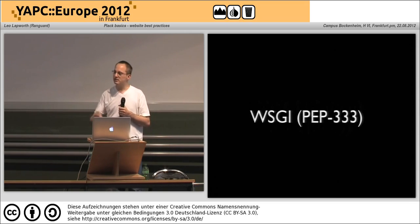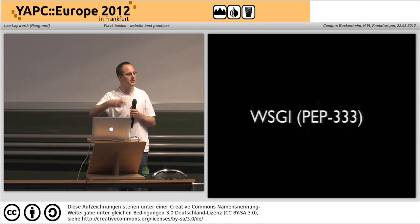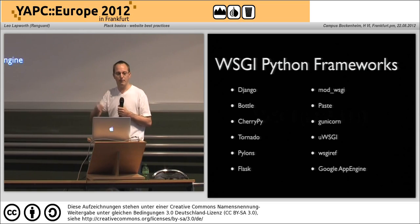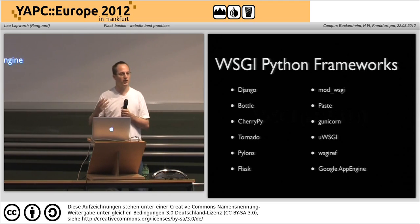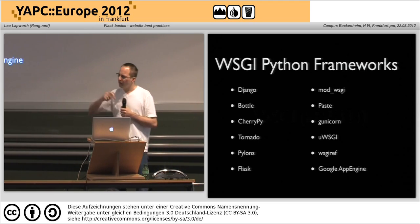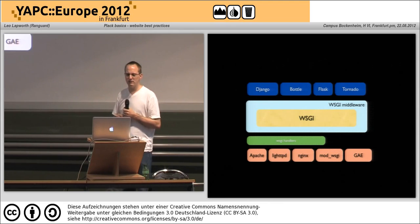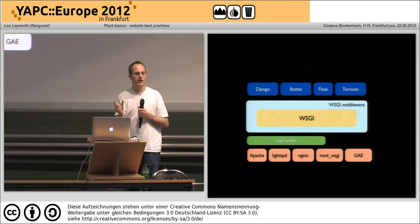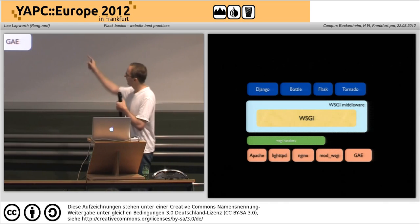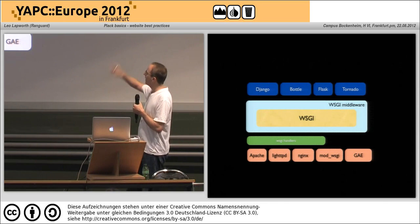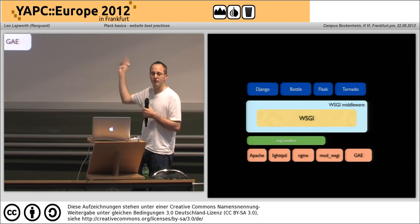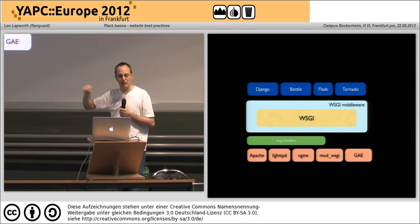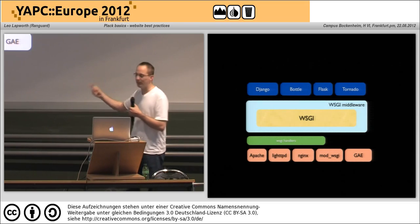WSGI is Python's way of talking to all these different web servers. When you look at the Python frameworks, all of them use WSGI. How does that look? You've got WSGI as your application right at that middle layer in yellow, around that you have some middleware layers, and at the top you've got your different types of frameworks. WSGI uses handlers to talk to all the different web servers at the bottom.